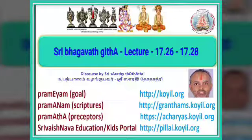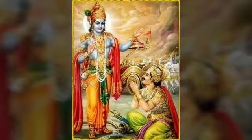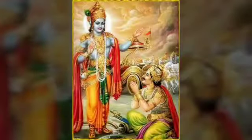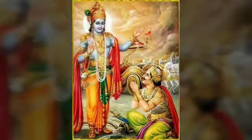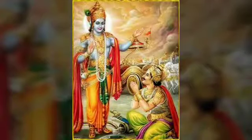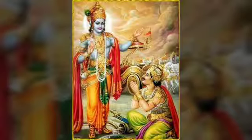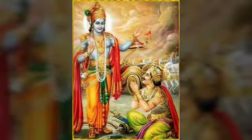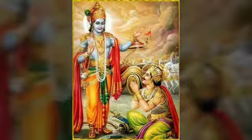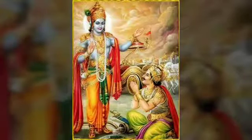Shri Bhagavad Gita, 17th chapter. We are coming towards the end of the 17th chapter. In this chapter, three types of Shraddha — faith — are explained by Bhagavan. This chapter is titled Shraddha Traya Vibhaga Yogam. Not only the faith but the outcome of such faith, which is in the form of Dhanam, Tapasya, Yagyam and so on, are also classified into Sattvika, Rajasa and Tamasa ways.